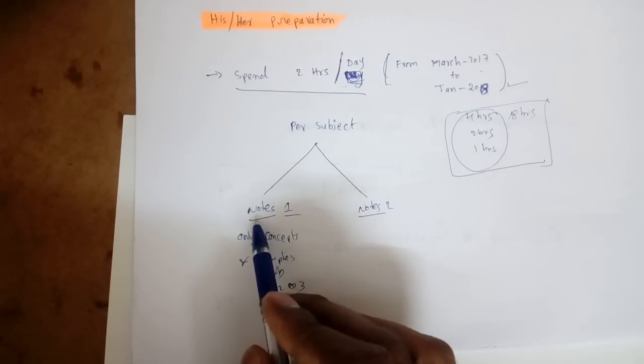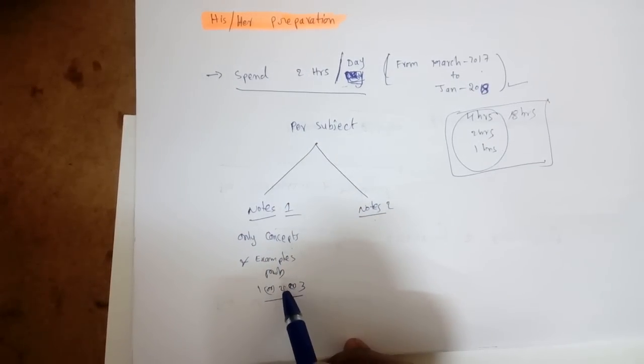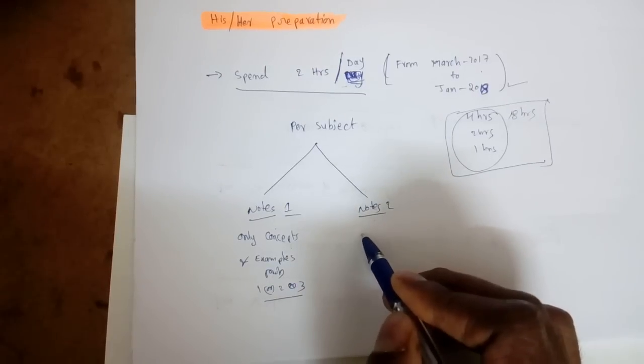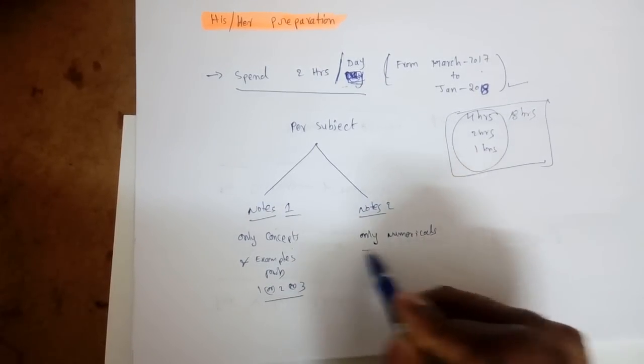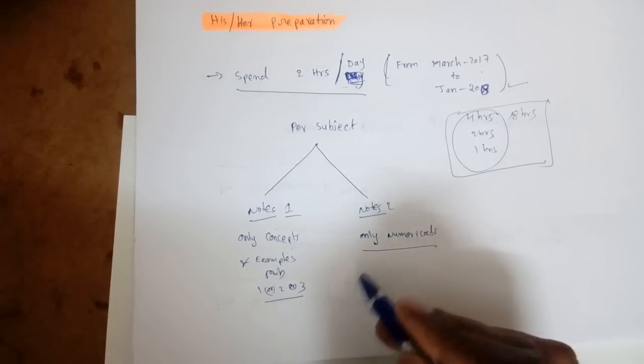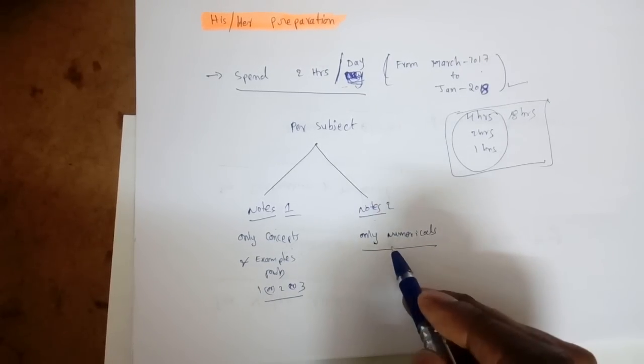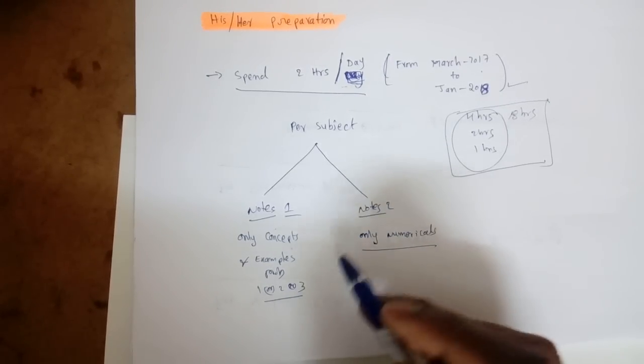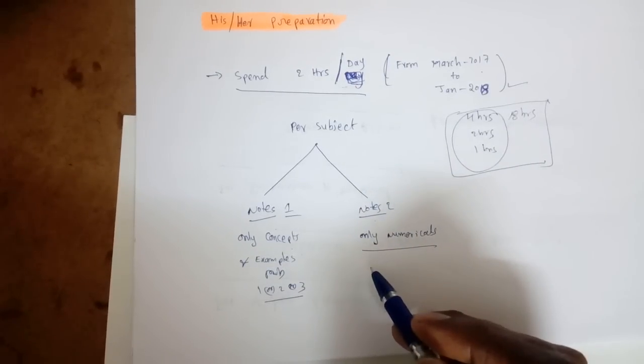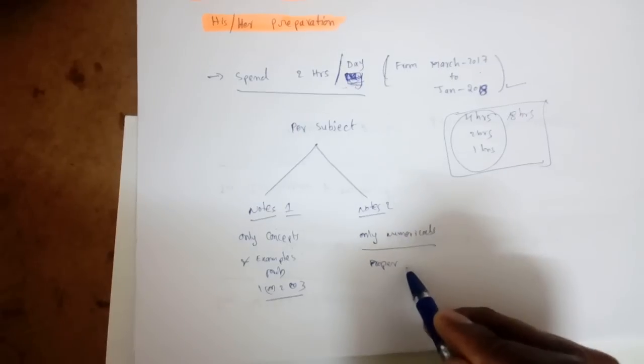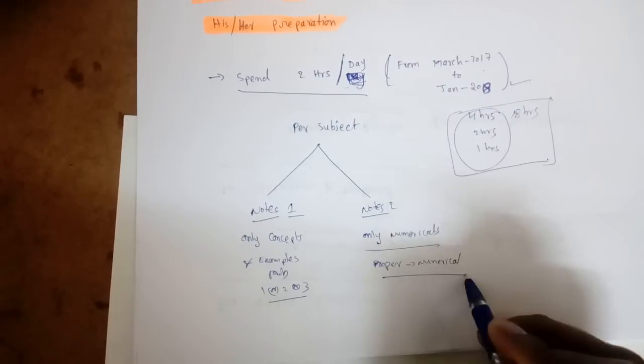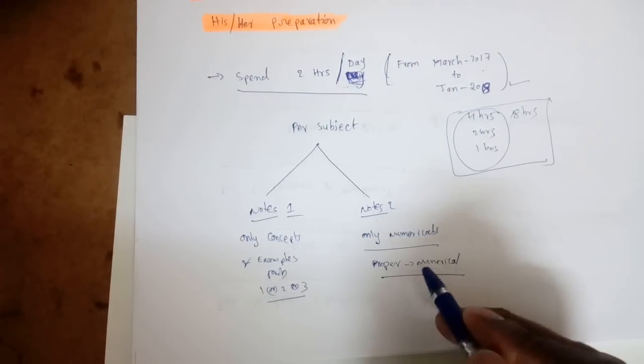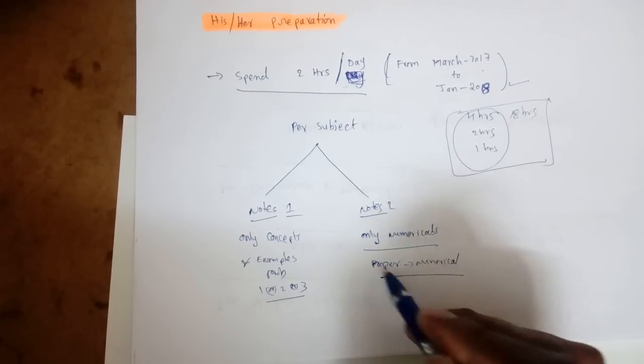Make notes one which is only concepts and one or two examples. In notes two, only numericals we will do, only problems in a proper way. When we go for revision, you can check what procedures we did and what modifications we can make, like easy steps. Make proper notes for numericals also. This is good when we go for revision.